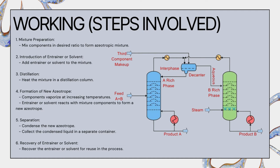The newly formed azeotrope mixture is collected in another container. The entrainer or solvent is then typically recovered and recycled for cost saving. In summary, azeotropic distillation works by exploiting differences in boiling points: the mixture is heated in the still and vapor rises through the column, coming in contact with descending liquid. Components with higher boiling points condense and return to the liquid phase, while those with lower boiling points continue to rise. The goal is to break the azeotropic composition by adjusting temperature, pressure, or by addition of the entrainer.